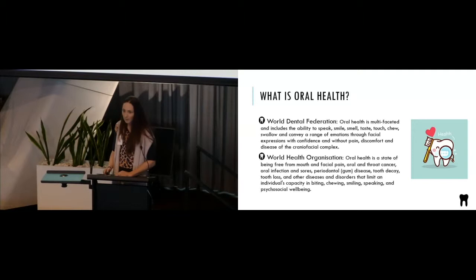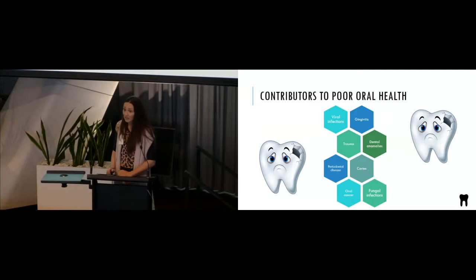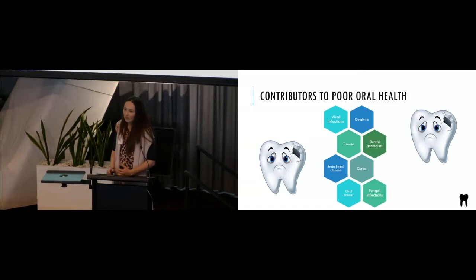So going through contributors to poor oral health, the main things we hear about are gingivitis and gum disease or decay but we see a lot of children that have had significant traumatic injuries to their dentition that has significantly affected their oral health. Children get viral infections that can be displayed in the mouth. There's dental anomalies too so this could be an anomaly in the enamel or the dentine but also the numbers of teeth and the way the teeth form. Oral cancer and then some fungal infections too.